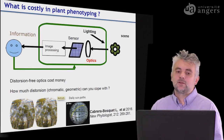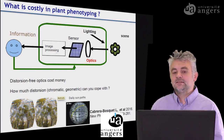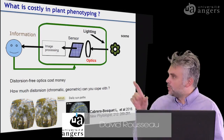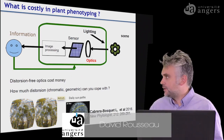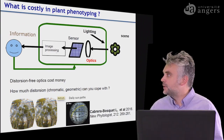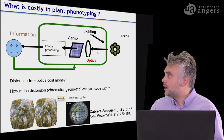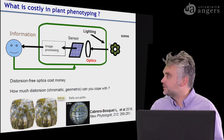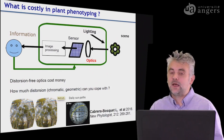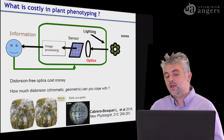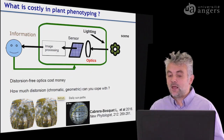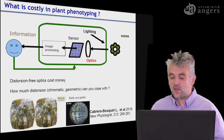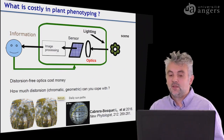Hi everyone, thank you for being back again on the analysis of the computer vision pipeline for designing low-cost plant phenotyping. We already had a look at the impact of the choice of the scene, how the plants are positioned to the camera, and how the choice of the light can impact the price of an imaging system. Now let's have a look at further parameters along this pipeline.